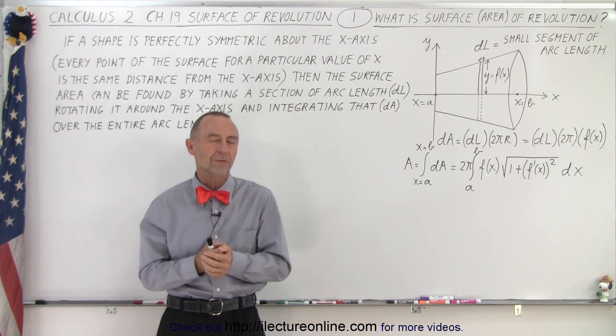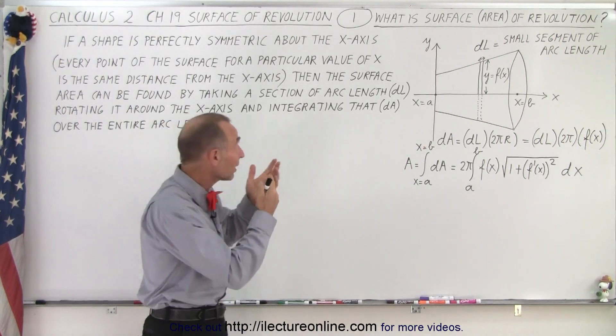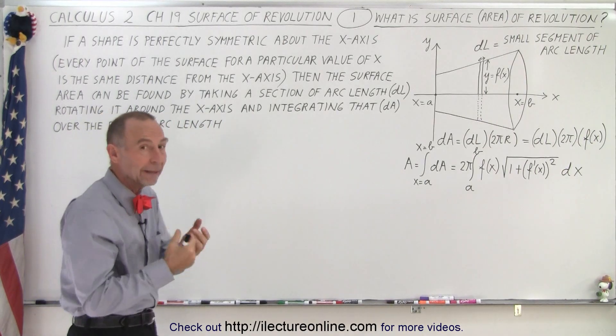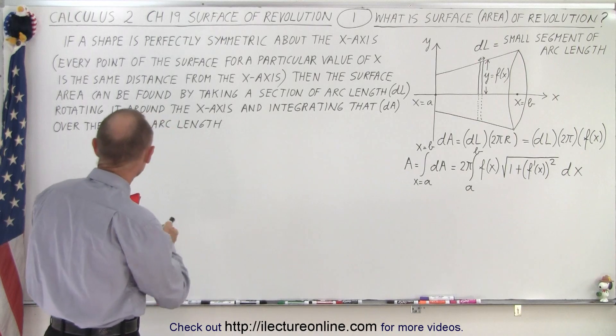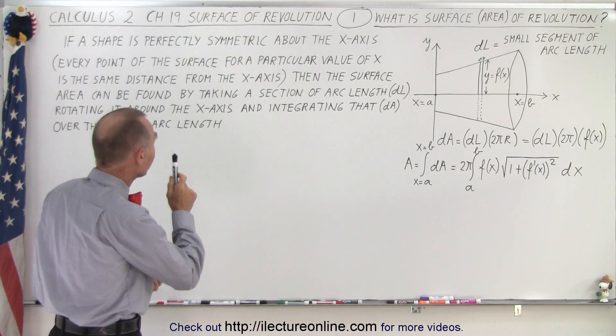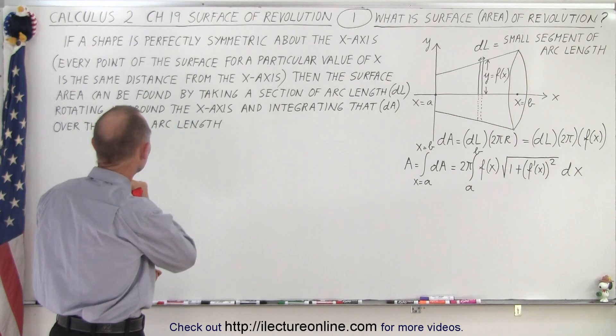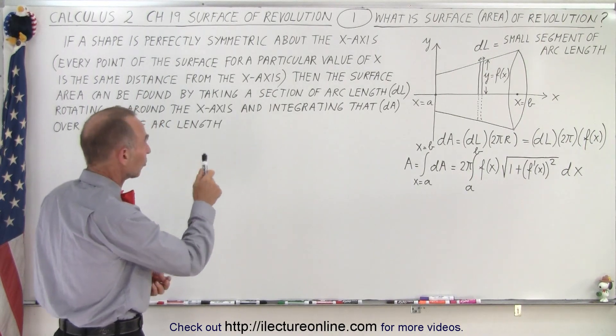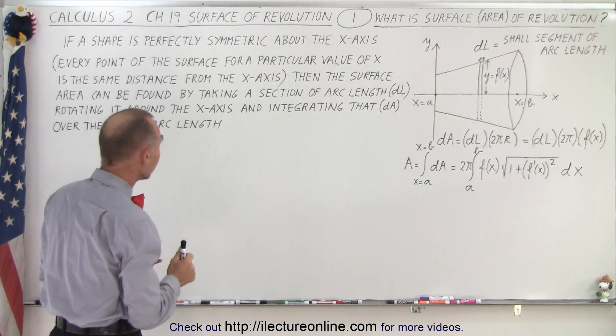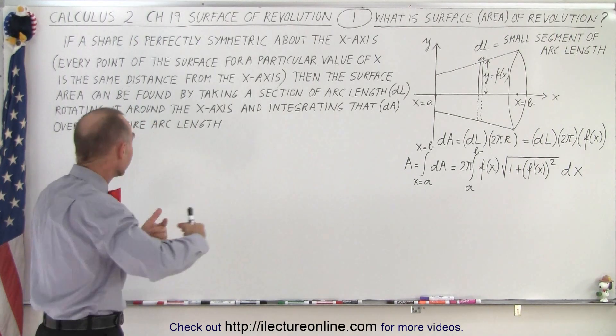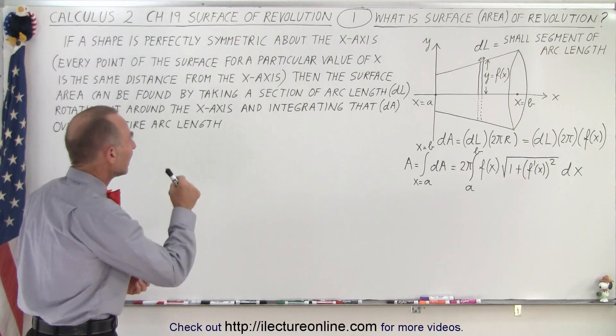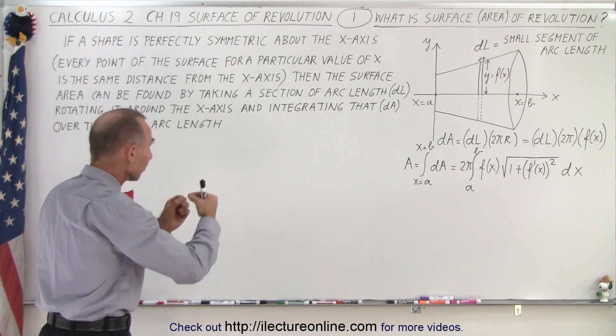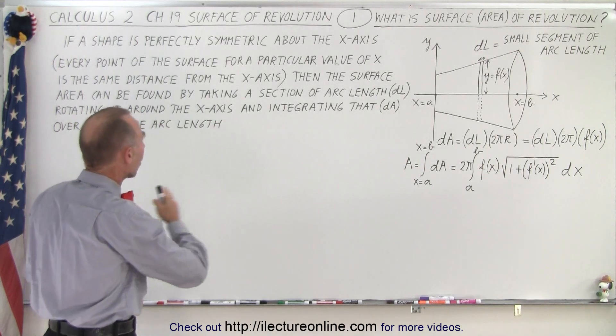So what is surface of revolution? If a shape is perfectly symmetrical about the x-axis, which means that for every point on the surface for a particular value of x, it is the same distance from the x-axis, then the surface area can be found by taking a section of arc length, which we call dl, and rotating it around the x-axis and integrating that piece, dA, a small area segment, over the entire arc length.